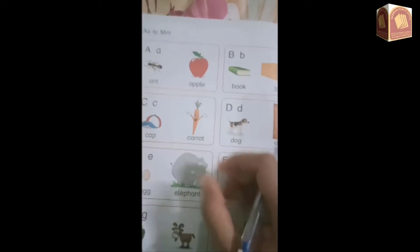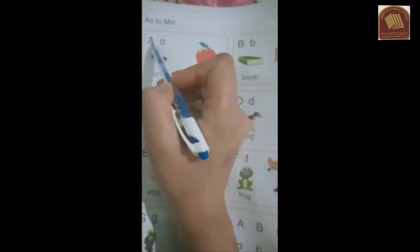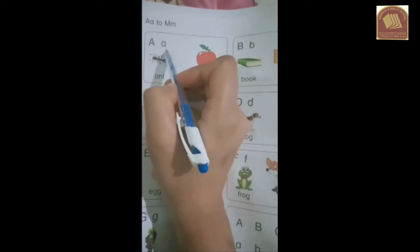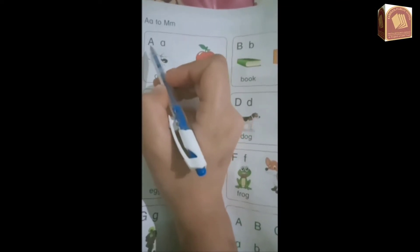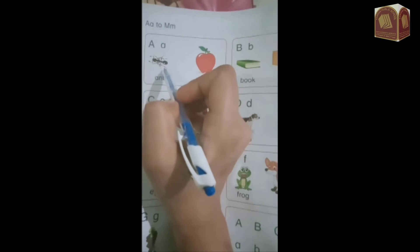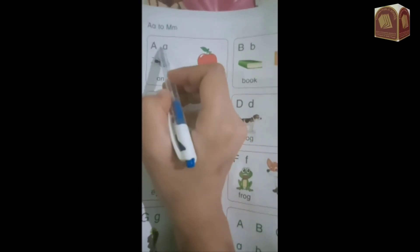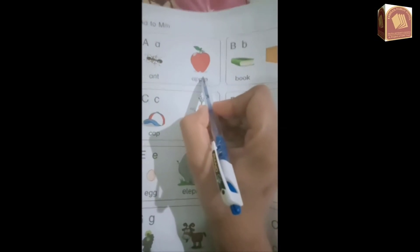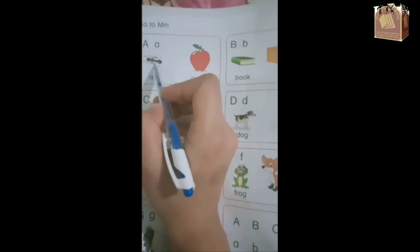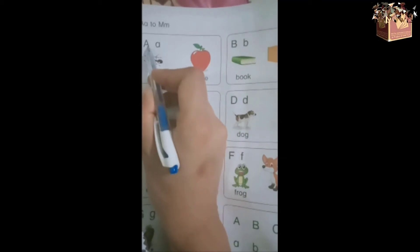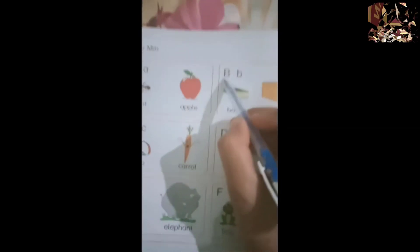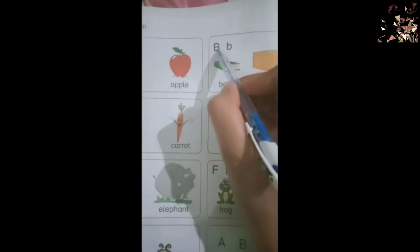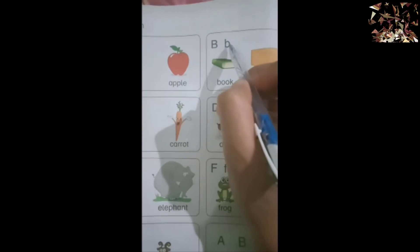So let's get started. This is capital A, this is small letter a. A is for ant, A is for apple. Repeat after me: A is for ant, A is for apple. This is capital B, this is small letter B.